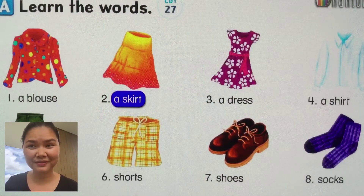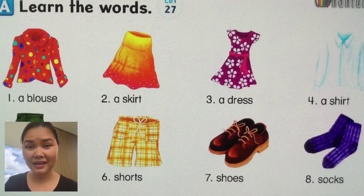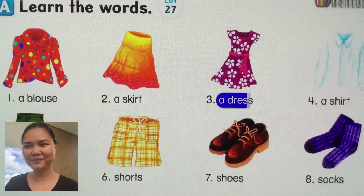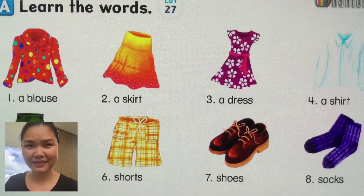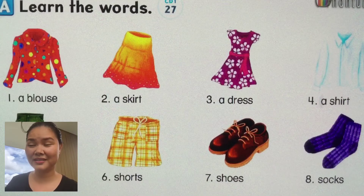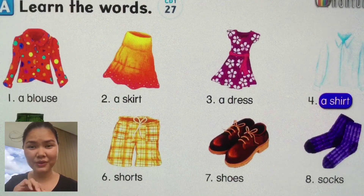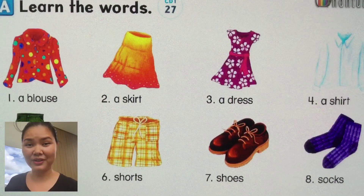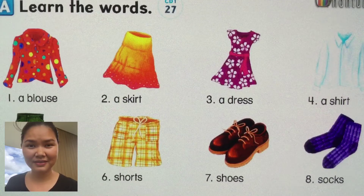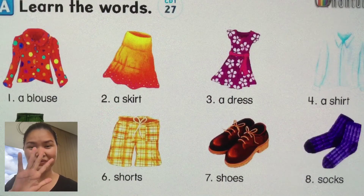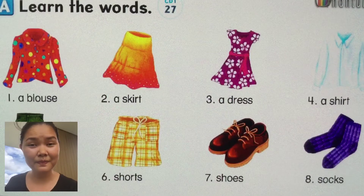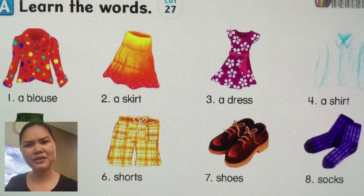Number one: a blouse. Number two: skirt. Number three: a dress. Yes, it's a dress. Number four: what's number four? Did you say a shirt? That's correct.